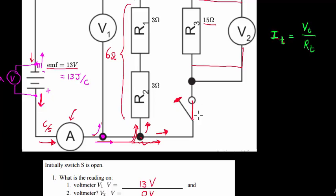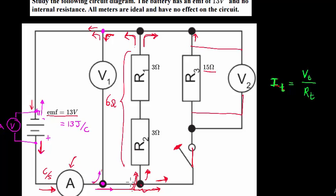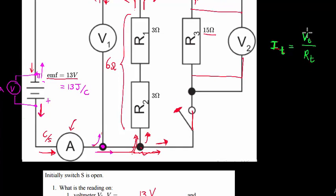With the switch open, the current follows only one path through R1 and R2, giving a total resistance of 3 + 3 = 6 ohms. The total voltage is the EMF, which is 13 volts — the energy the battery supplies per coulomb. So the total current is 13 divided by 6.